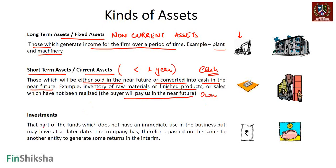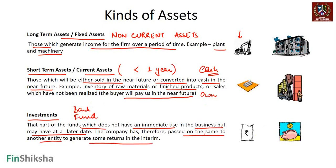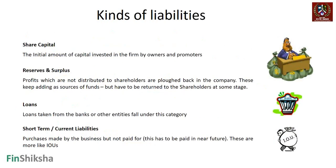Cash is also a current asset - it's immediately usable and already liquid. Everything else - funds without an immediate use in the business but potentially needed later - can be classified as investments. For example, putting money in a bank deposit, or passing it to a fund or another entity to generate returns in the interim. So assets are broadly: long-term fixed non-current assets, short-term current assets, and investments.